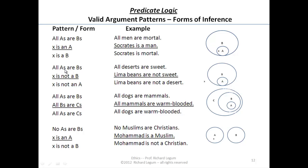Now look at the second one, all As are Bs, left to right, x is not a B. So we're going in the negative direction, x is not a B. So if we're going negatively, we're going right to left, so we can conclude that x is not an A.